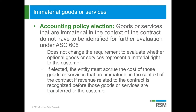There is an accounting policy election available. If there are goods or services that are immaterial in the context of the contract, they don't have to be identified for further evaluation of the guidance. If an entity elects this policy election, then what they have to do is accrue the cost of the goods or services that are immaterial in the context of the contract.